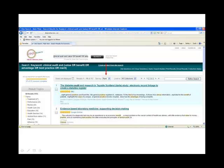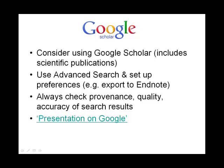OneSearch offers a ranking of search results by relevancy. However, you can amend this to date, author, or title. OneSearch is a federated search engine covering all our databases. However, if you wish to conduct a search on the internet, you may want to consider the following points: consider using Google Scholar, which includes scientific publications; use advanced search and set up preferences, for example export to EndNote; and always check provenance, quality, and accuracy of search results. One of the clinical librarians has done a presentation on Google, and a link is available on this slide.